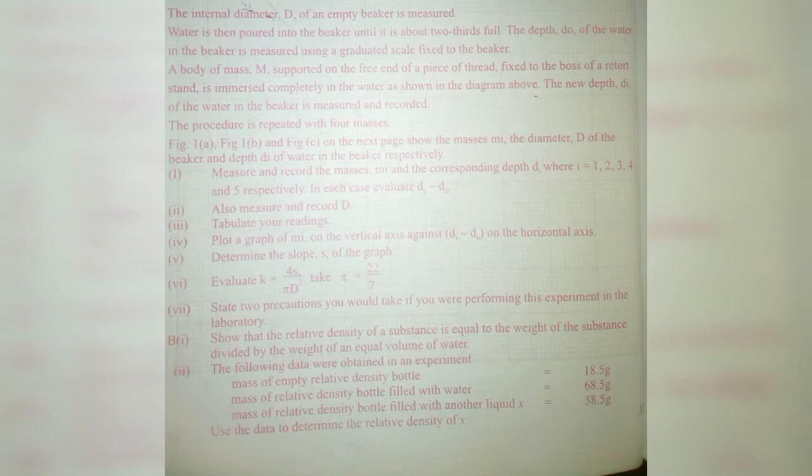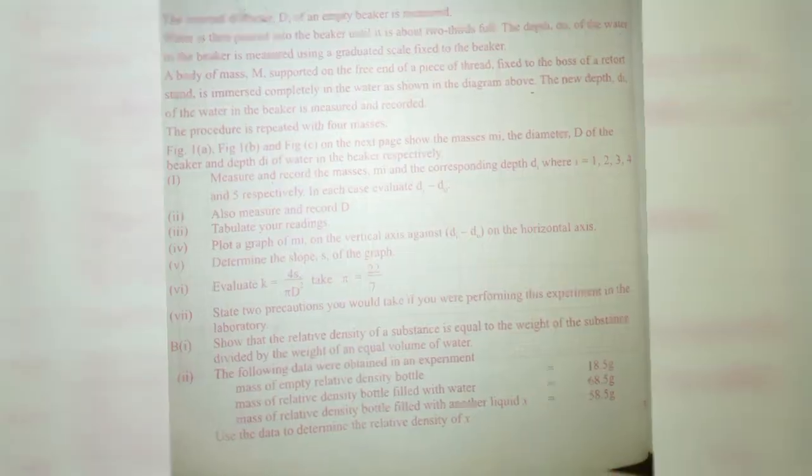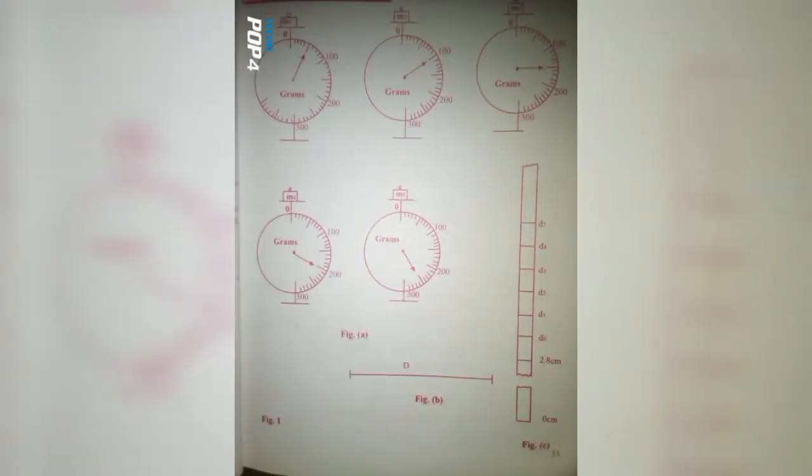Measure and record d, the diameter of the beaker. Tabulate your readings and plot the graph of dᵢ minus d₀ on the horizontal axis and mᵢ on the vertical axis. Then determine the slope s of the graph and evaluate k equals 4hs over πd². Take π as 22/7. Take your precautions.